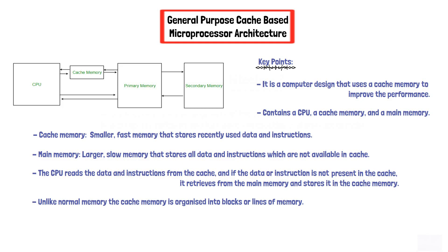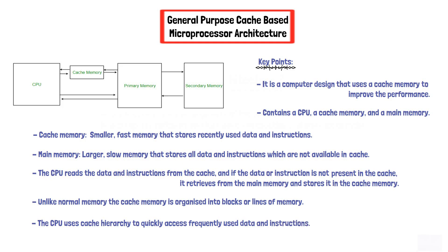Additionally, the CPU uses a cache hierarchy to quickly access frequently used data and instructions. A hierarchy is an arrangement of frequently used data and instructions into different ranks or levels of importance.